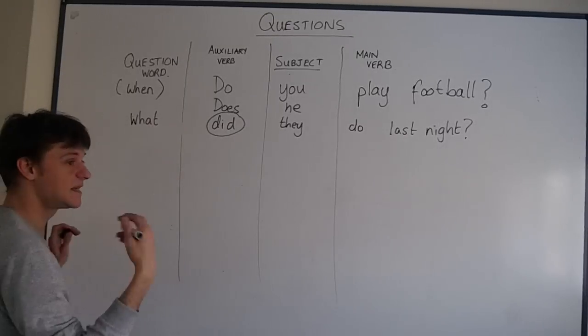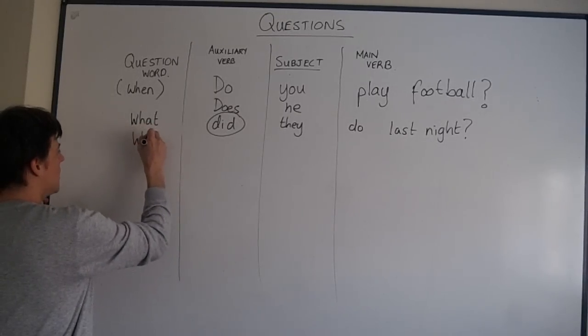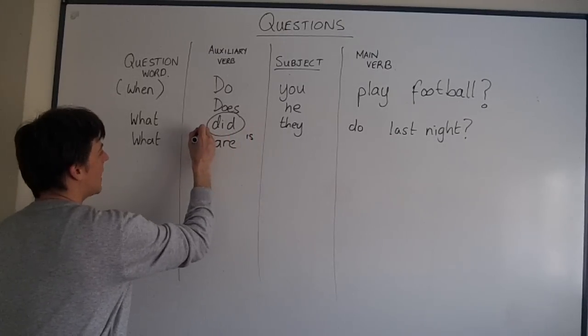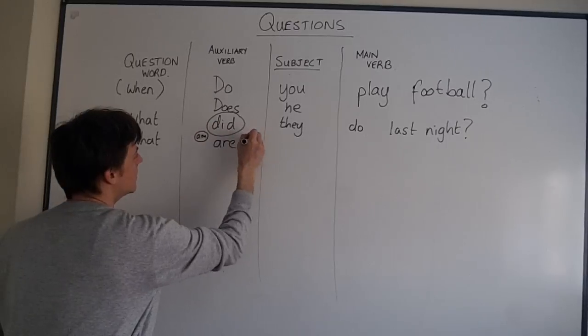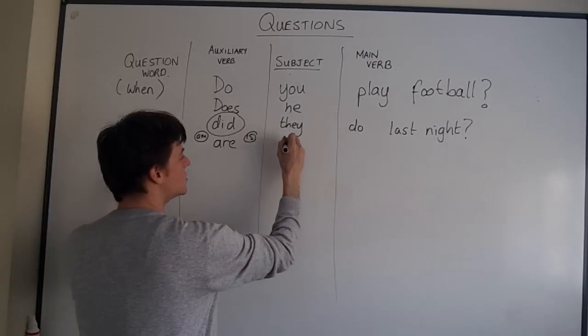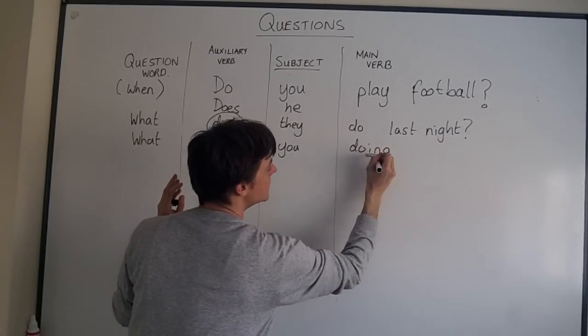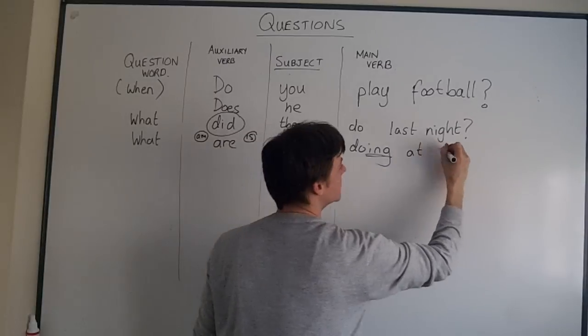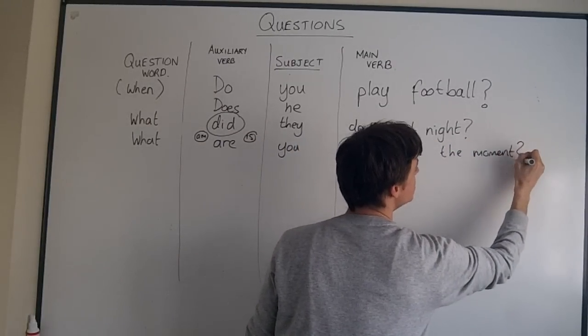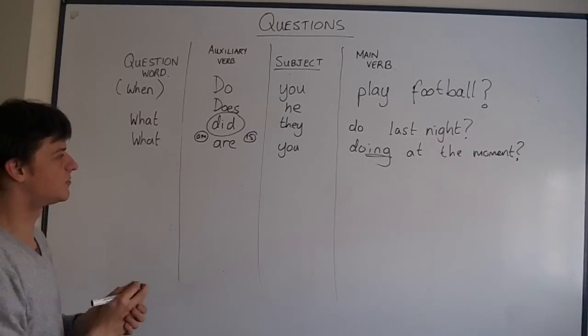If we have present continuous, what are or is or am is what we use with present continuous. What are you doing at the moment? OK. Doing at the moment. What are you doing at the moment? I am teaching. Are you listening? Are you studying? Are you making notes? I hope so.